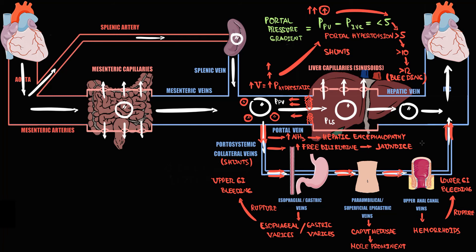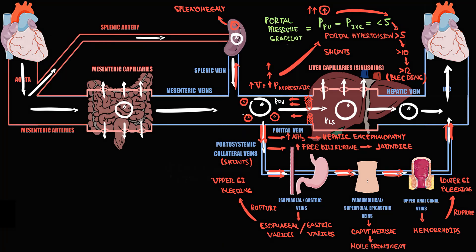After the portal vein, blood begins to accumulate in the splenic vein and then in the spleen. Increasing blood volume inside the spleen causes spleen distension and enlargement — called splenomegaly. Blood also begins to accumulate in mesenteric veins and then in mesenteric capillaries. With increasing volume of blood, hydrostatic pressure inside the mesenteric capillaries increases, causing edema of the mesenteric tissue and resulting in ascites.